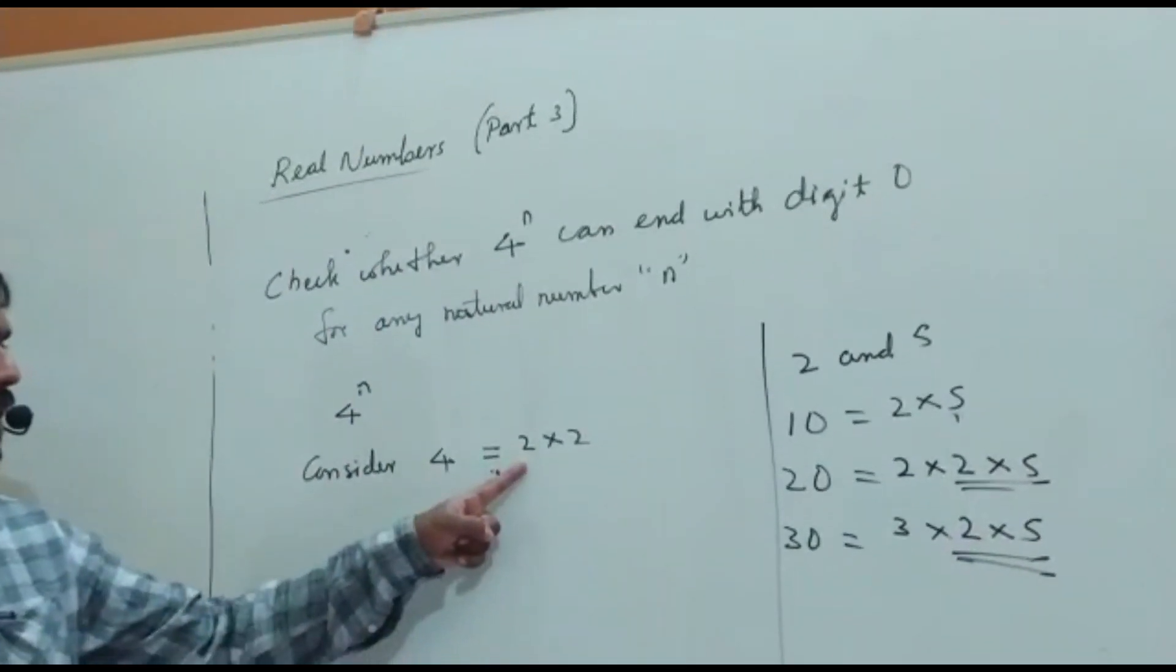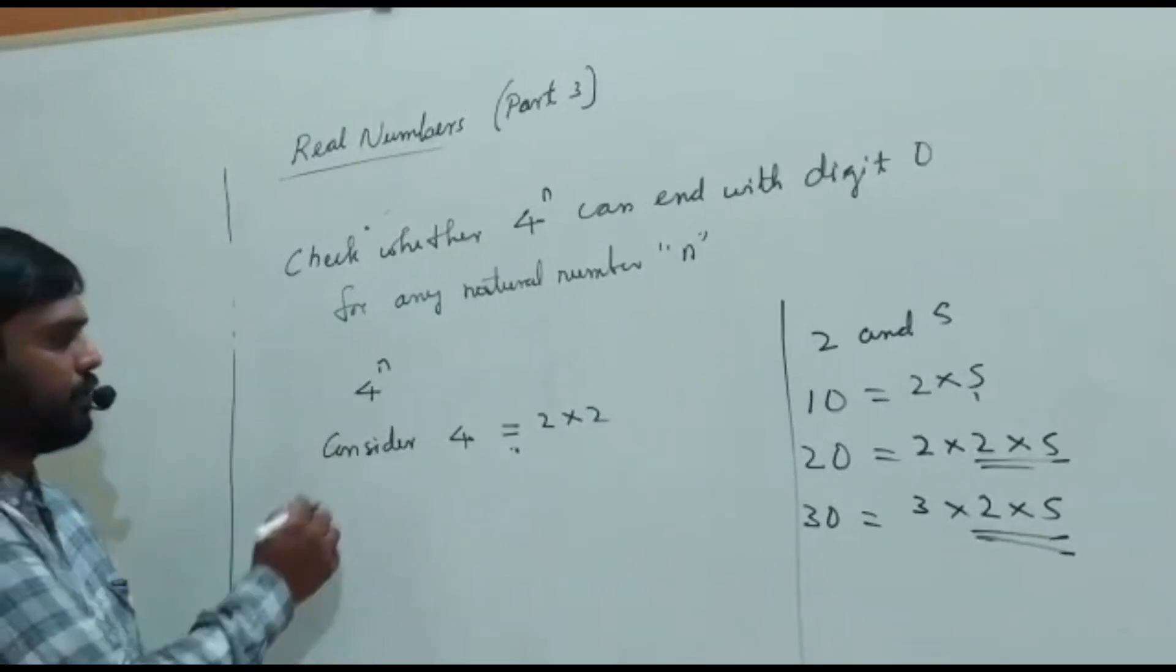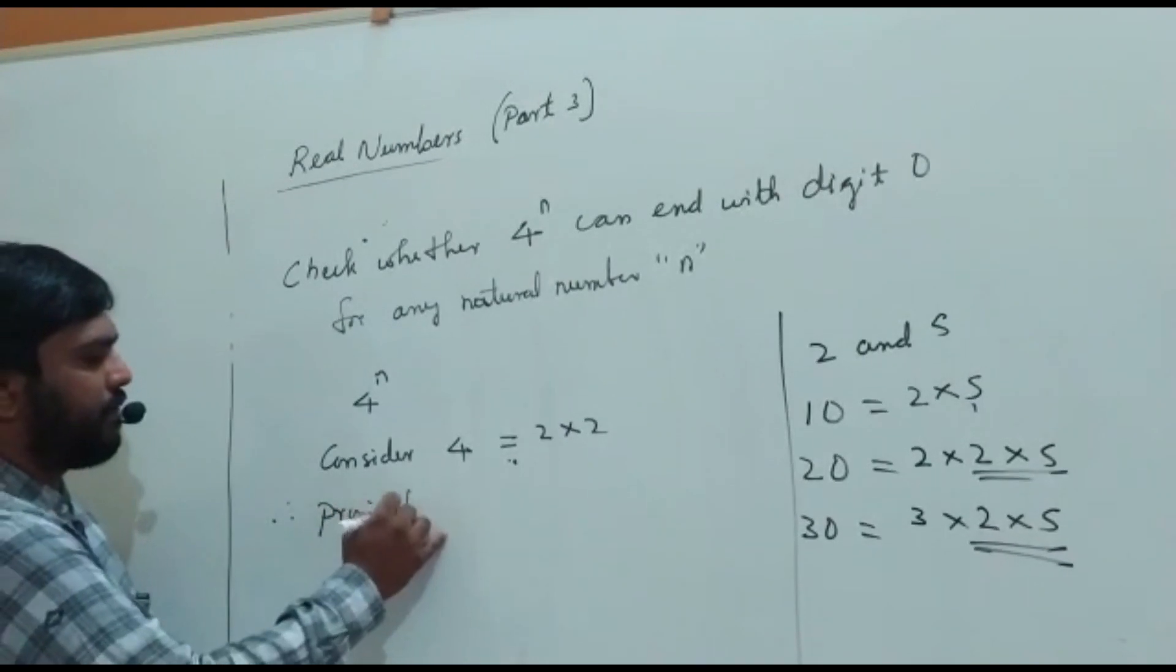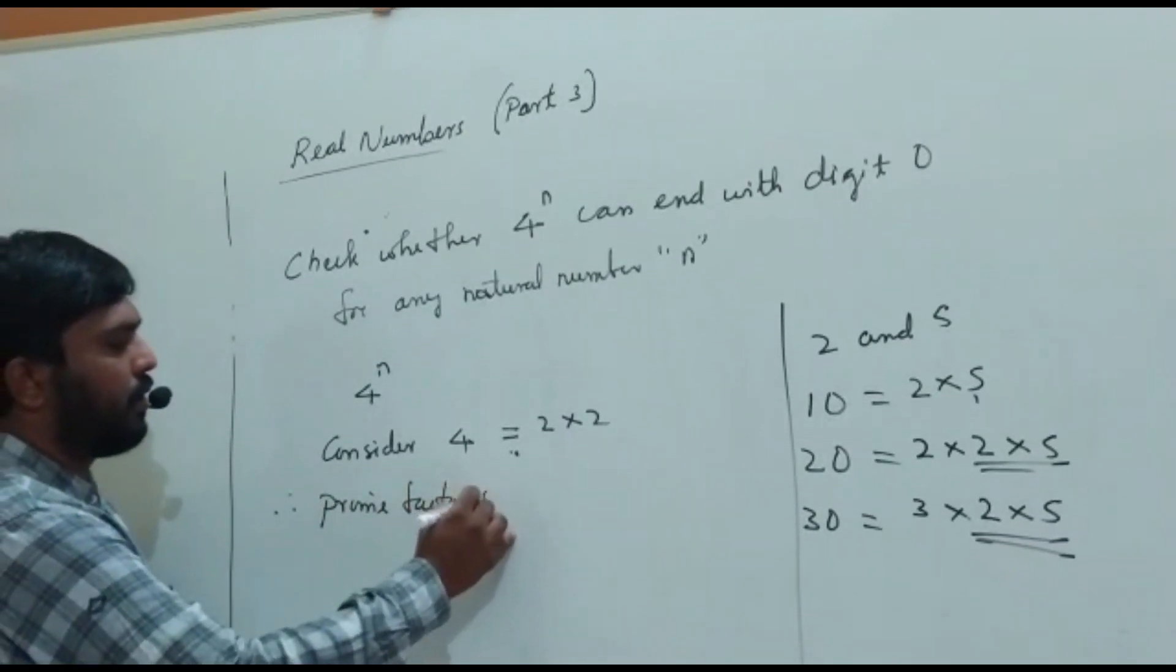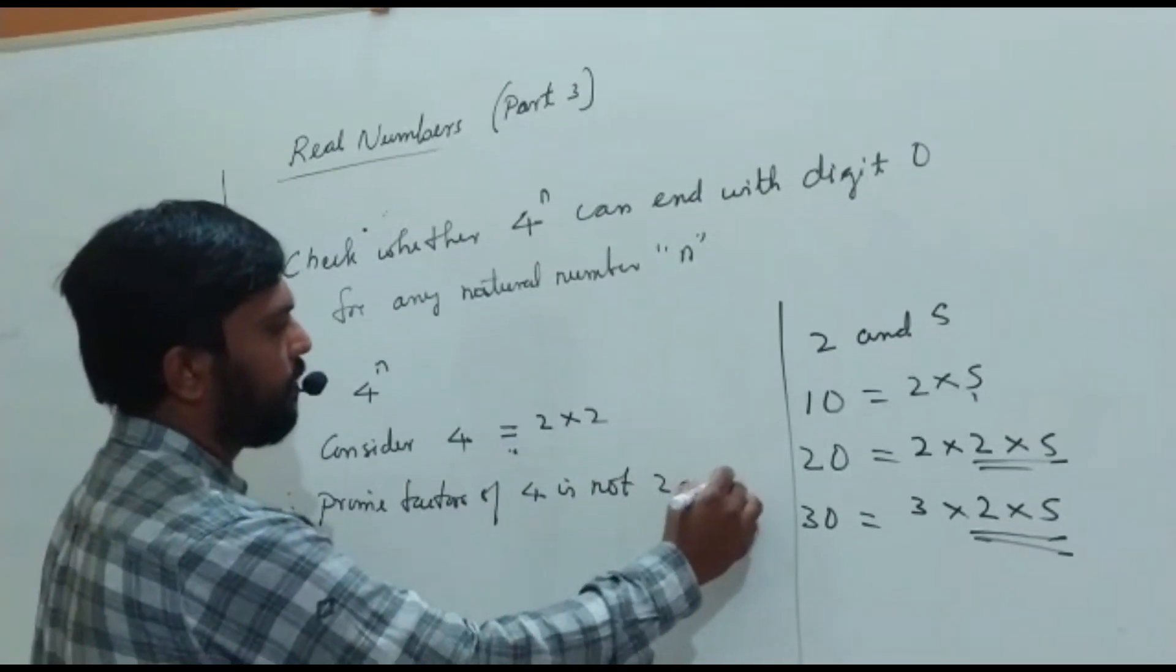Here, you don't have the prime factorization 2 and 5. So therefore, prime factors of 4 is not 2 and 5.